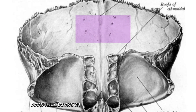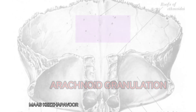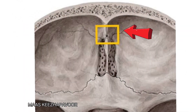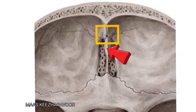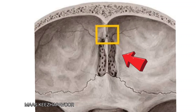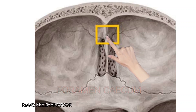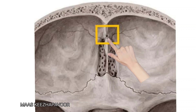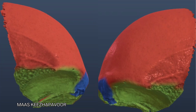The edges of the sagittal sulcus unite below to form the median frontal crest. This crest gives attachment to the anterior part of the falx cerebri. Small pits are seen by the side of the sagittal sulcus for arachnoid granulations. The frontal crest ends in a notch at its lower end where it articulates with the cribriform plate, and it is converted into the foramen cecum. If present, it transmits an emissary vein connecting veins from the nasal mucosa with the superior sagittal sinus.